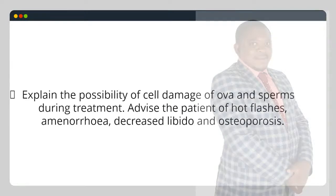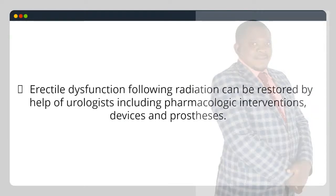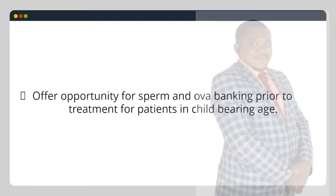Reproductive dysfunction. Explain the possibility of cell damage to ova and sperm during treatment. Advise the patient of hot flashes, amenorrhea, decreased libido and osteoporosis. Vaginal stenosis may occur when the treatment field encompasses the vaginal vault; to minimize this, use a vaginal dilator for 15 minutes three times a week for at least one year. Vaginal dryness can be relieved with lubricants such as KY jelly or vaginal moisturizers. Erectile dysfunction following radiation can be restored with the help of urologists including pharmacologic interventions, devices and prostheses. The ovaries can be shielded from radiation by surgically moving them out of the treatment field (oophoropexy). The testicles are shielded from radiation if possible. Offer opportunity for sperm and ova banking prior to treatment for patients of child-bearing age.